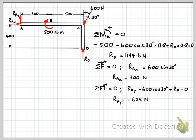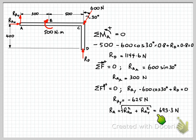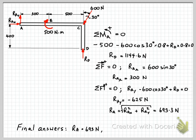The question asks for the magnitude of the forces at the support. We have RAX and RAY, so we combine those using Pythagoras' theorem — the square root of the sum of the squares. Substituting the values, we get 693.3 Newtons. Finally, summarizing and rounding to the appropriate significant figures: RA, the magnitude of the reaction force at the pin at A on component ABCD, is 693 Newtons, and the force at support D is 1.44 kN.